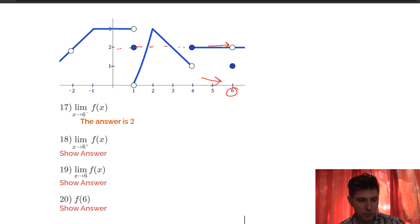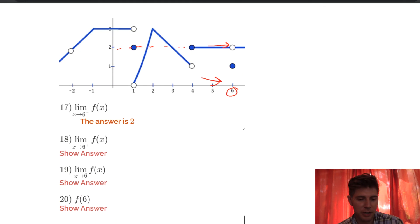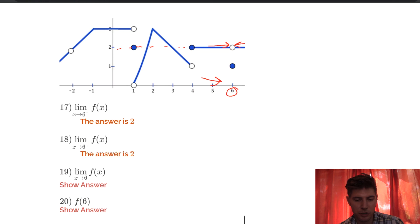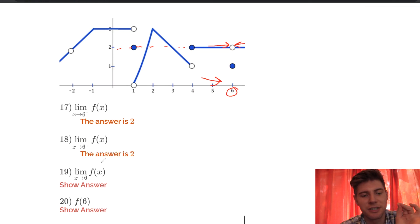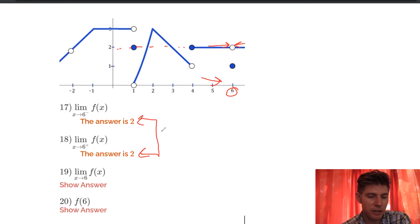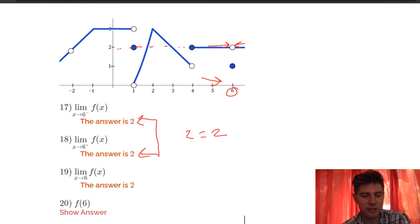Number 18: the limit as x approaches 6 from the right — the plus means from the right. Approaching from the right, that's also approaching 2. Number 19: the limit as x approaches 6 — we look at the left limit and the right limit, they're both equal to 2, so the limit itself is equal to 2.